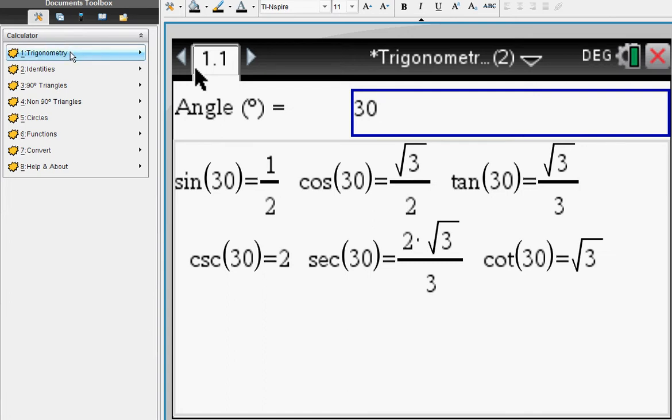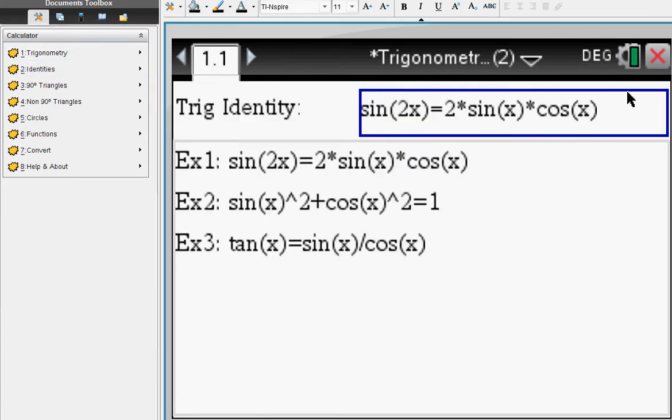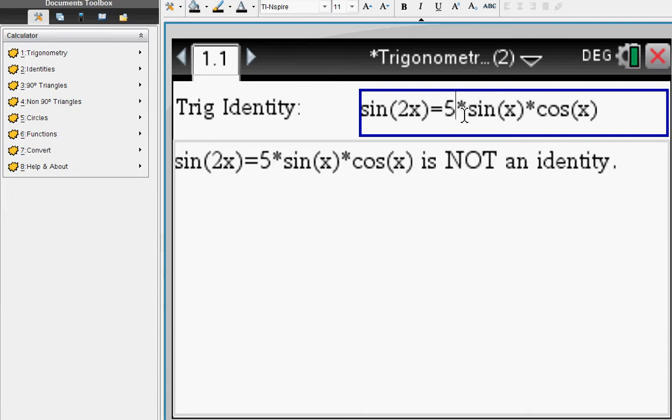The trig identity checker checks if a trig identity is indeed an identity. Like this one is, but if you change the 2 to a 5, it's not anymore. So it checks for you if it is or not.